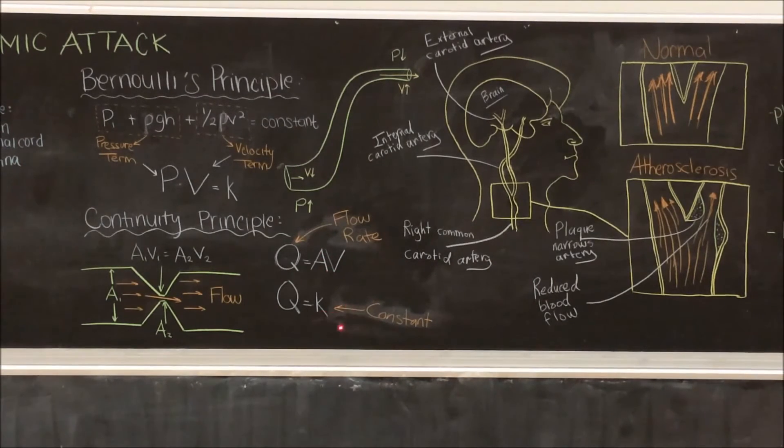This is thought to stay constant at either end of a passage. Q represents flow rate and is equal to the area times velocity which is constant as seen on the diagram.